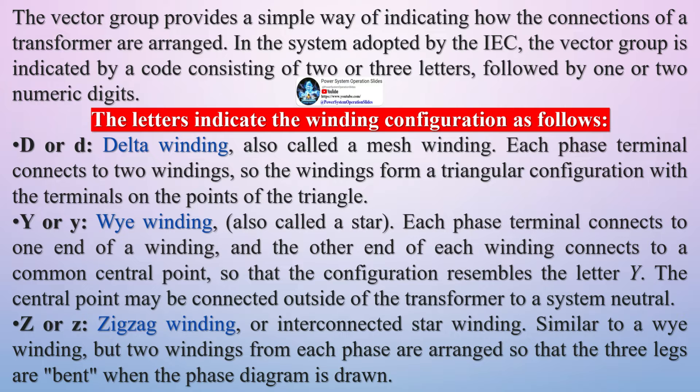3. N or N-neutral. The star point neutral is brought out to an external terminal. 4. 0-12 phase displacement. Phase displacement in terms of clock position in multiples of 30 degrees.